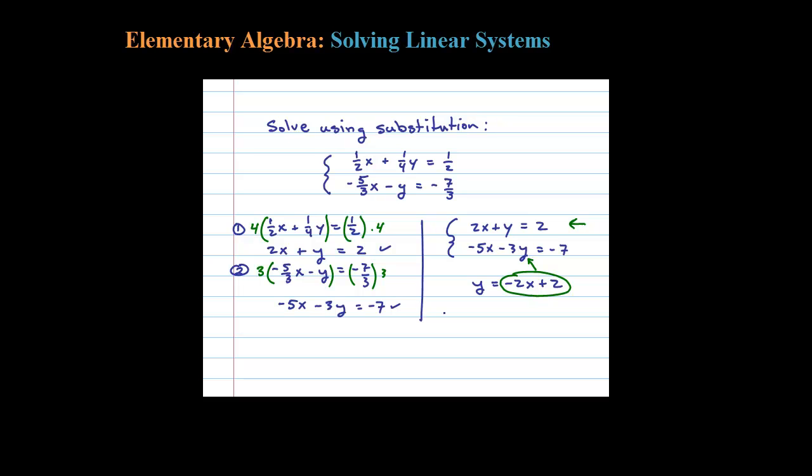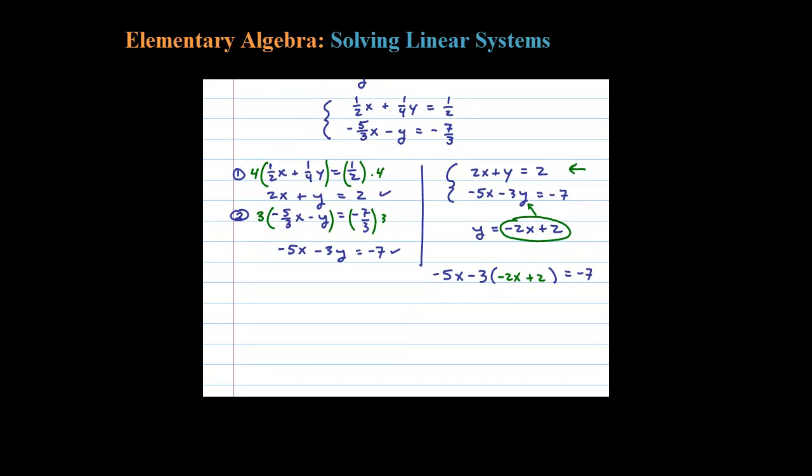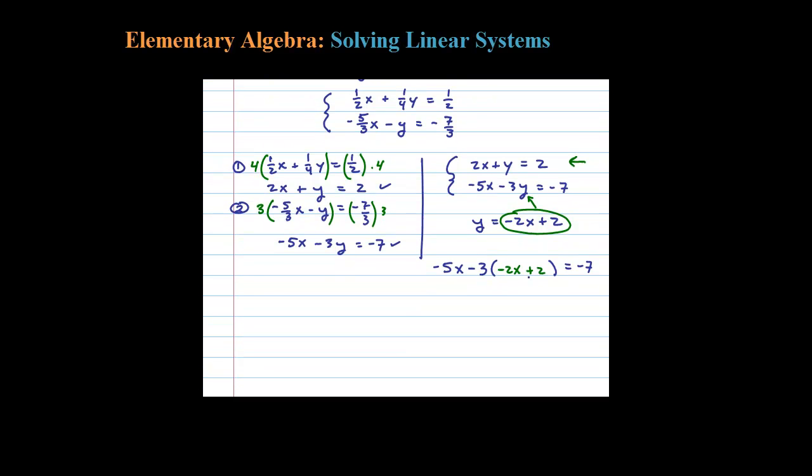So this is the substitution step: -5X - 3 times Y = -7. We're going to plug in -2X + 2 for Y. What's left is an equation with only one variable, and we can use regular algebra to solve that.